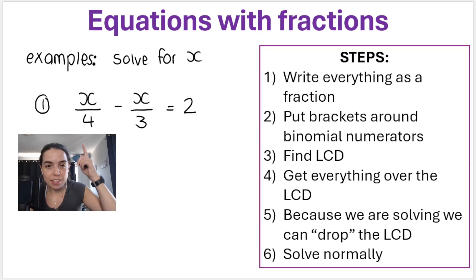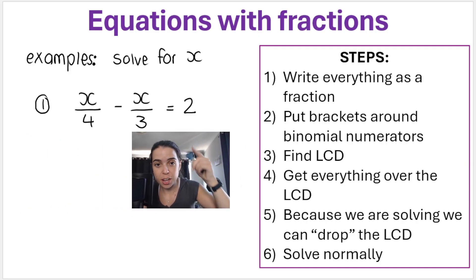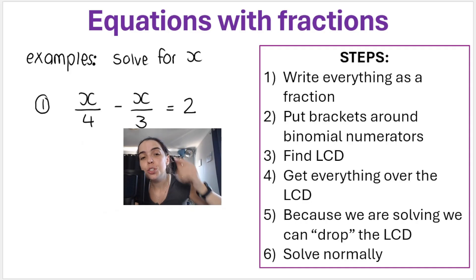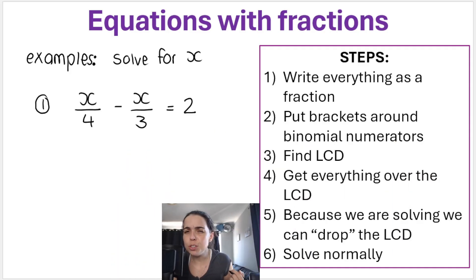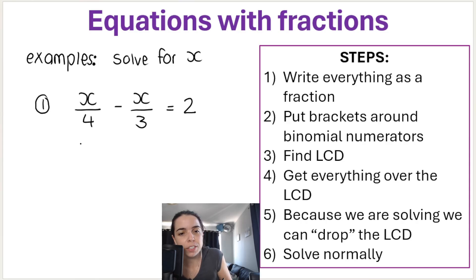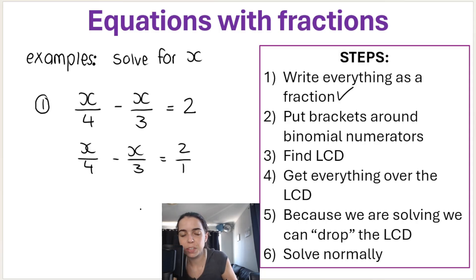Write everything as a fraction. Now that is a fraction, that is a fraction, but that is not a fraction. So you first have to write two as a fraction. A whole number can be written as a fraction by putting it over one. Two over one is the same thing as two. So we've done step one: write everything as a fraction.